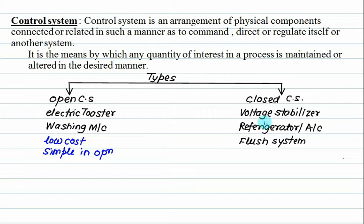Closed systems include voltage stabilizer, refrigerator, air conditioning system, and flush system. The cost involved is more in closed systems because some checking arrangement is required to feed the output back to the input.